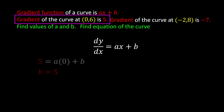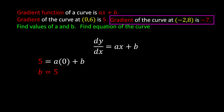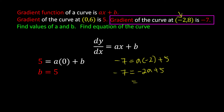Now using the second condition where gradient is negative 7 and x is negative 2: negative 7 equals a times negative 2 plus b. Since b is 5, we get negative 7 equals negative 2a plus 5. Rearranging: 2a equals 5 plus 7, so a equals 6.